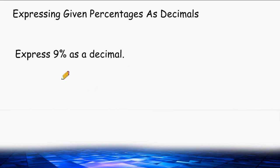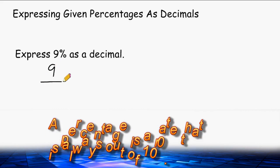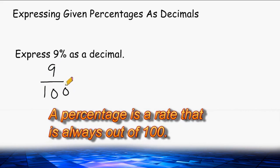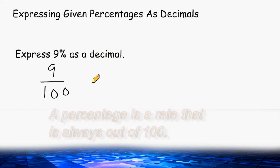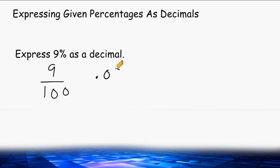We have 9% and we have to express this as a decimal. The percentage symbol stands for out of 100, so as a fraction 9% can be expressed as 9 out of 100. Since we need a decimal, we can write the 9 in the hundredths place. We read this value as 9 hundredths, which is the same as 9 out of 100.